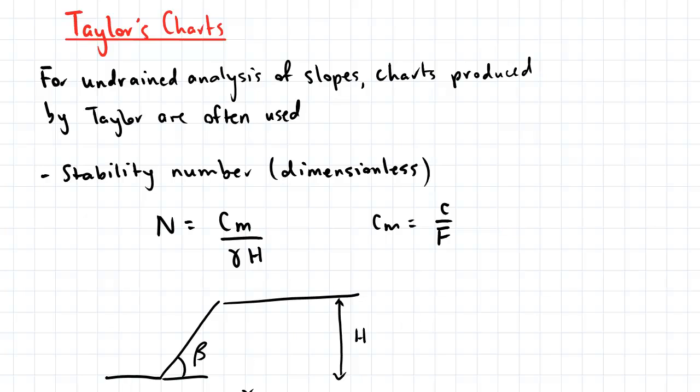And before I show you the charts, let me first introduce you to a dimensionless stability number known as N. So N is equal to Cm, which is the mobilized cohesion, divided by gamma, which is the unit weight of the soil in the slope, and H, which is the height. And the mobilized cohesion is equal to the cohesion of the soil divided by the factor of safety.